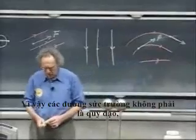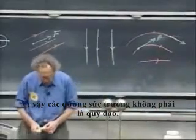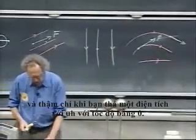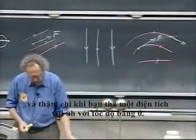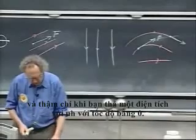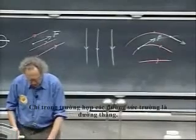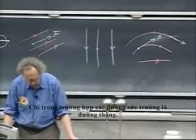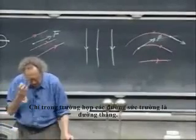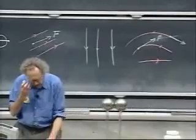So field lines are not trajectories — and not even when you release a charge with zero speed — only in the case that the field lines are straight lines.